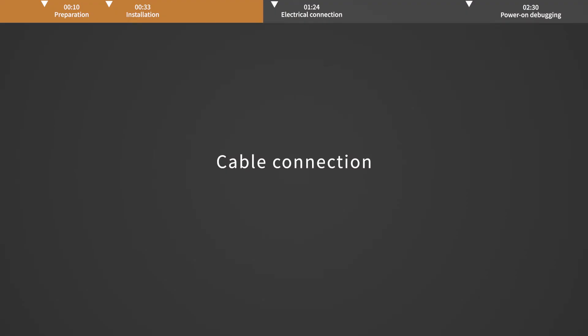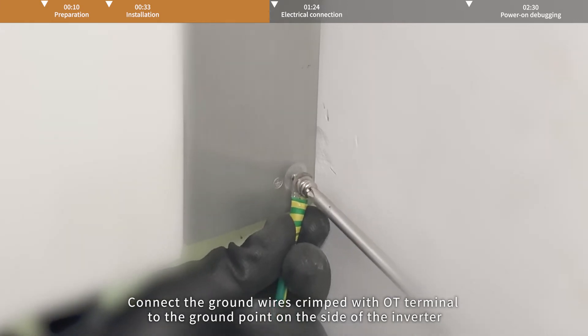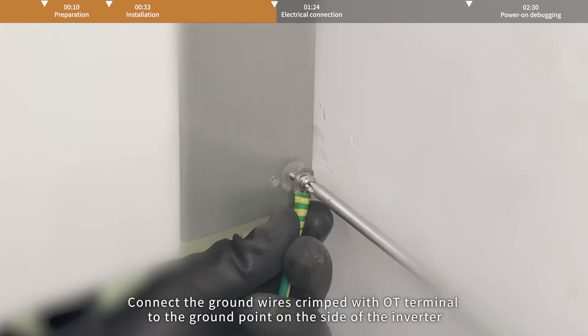Cable connection. Connect the ground wires crimped with OT terminal to the ground point on the side of the inverter.